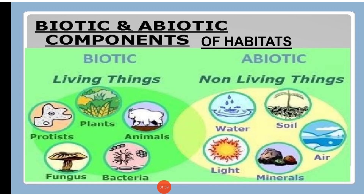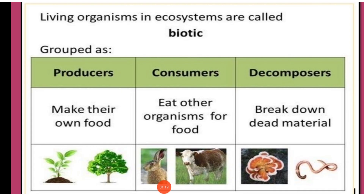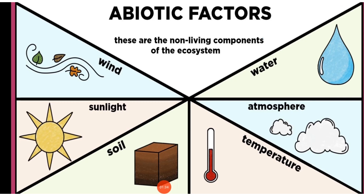Now the next point is biotic and abiotic components. Both components of the habitat influence the survival of organisms. Biotic components are the living organisms of a habitat, for example plants, animals and microorganisms. Non-living components are the abiotic components, for example soil, water, air, humidity and rainfall.